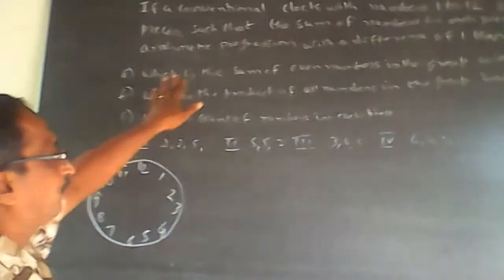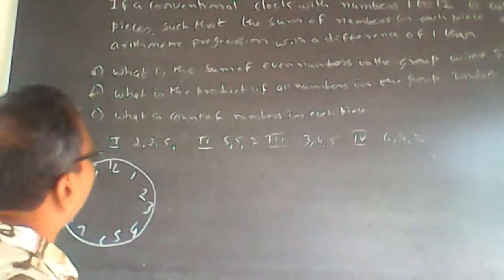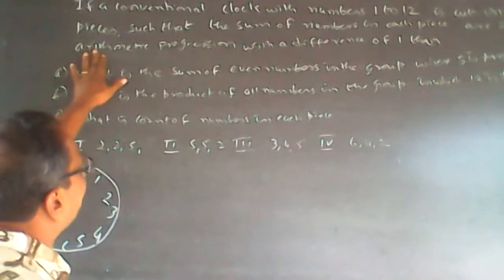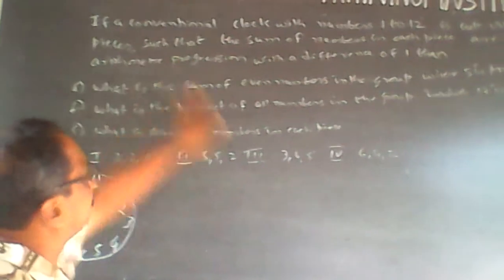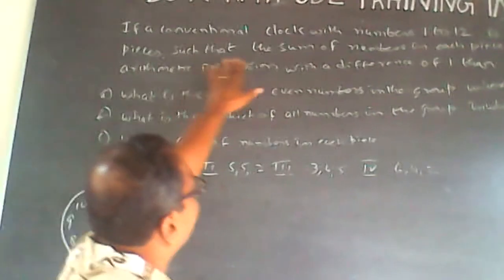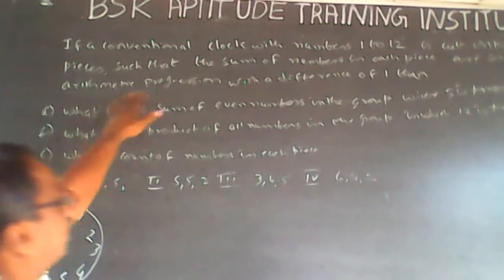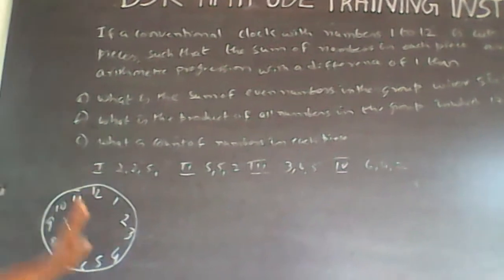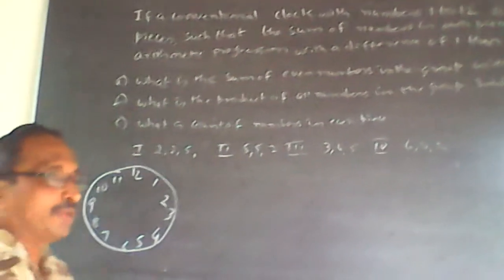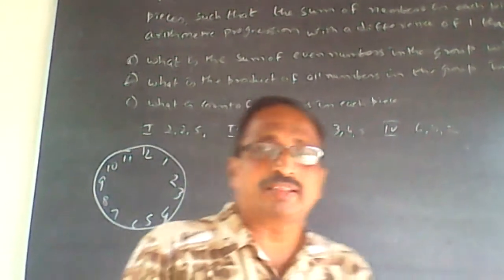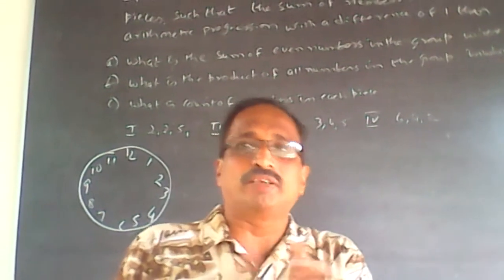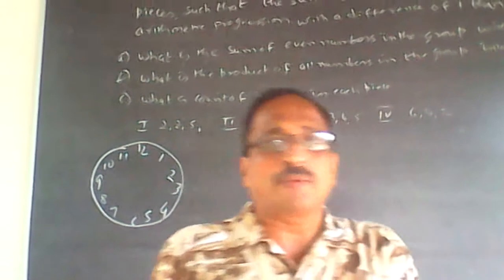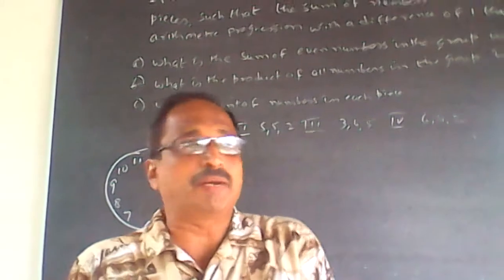This clock is to be cut into 3 pieces in such a way that the sums of the numbers in each piece are in arithmetic progression with a difference of 1. So there are only 3 sum values here, because it is getting cut into 3 pieces, with a difference of 1 between consecutive sums.